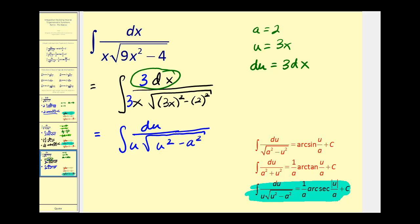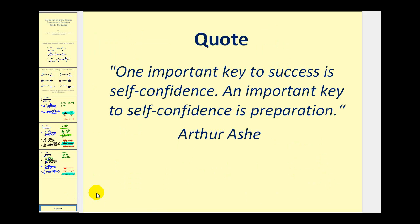So now we can find the antiderivative. It will be equal to one over a, or one half, times arcsecant of the absolute value of u over a, absolute value of three x over two, and then plus c. Okay, this is the first of several videos on integrals involving inverse trigonometric functions, so I do recommend you watch part two.